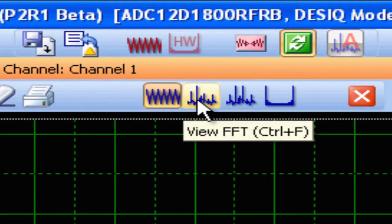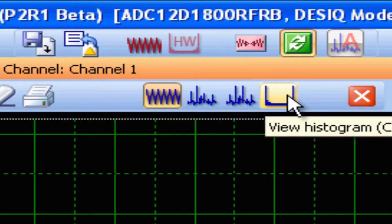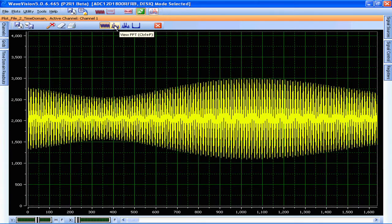This allows you to look at the frequency domain view. This tab allows you to look at the IMD3 or two-tone view. And this is a histogram view. So the first thing that we do is go ahead and select the FFT or frequency domain view.